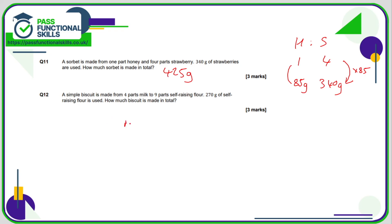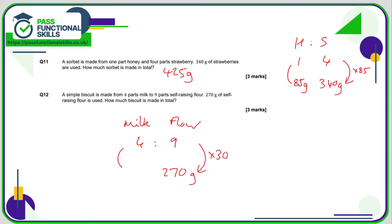Question 12: the ratio of milk to flour is 4 to 9. If we're using 270 grams of flour: 270 divided by 9 is 30, so we're scaling up by 30. The milk is 30 times 4, which is 120. Adding 120 to 270 gives 390, so 390 grams of biscuit is made in total.